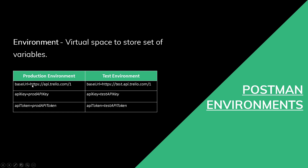If you switch from production to test environment, it will switch all the variables — so instead of calling https://api.trello.com it will start calling test.api.trello.com, and it will also update from the production API key to the test API key. You can have the same variable name but switch values depending on which context you're working with. This is extremely helpful when working with multiple environments.